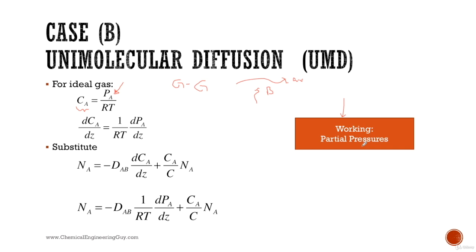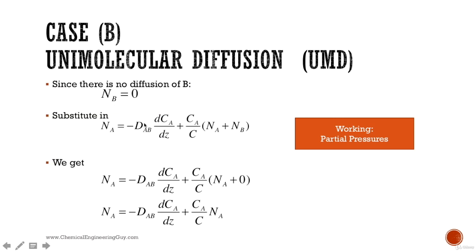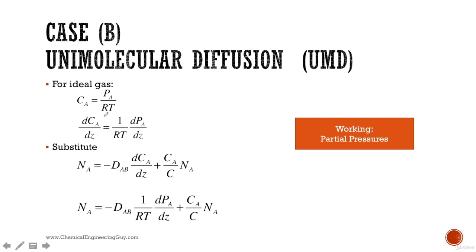Either select partial pressure or molar fraction. Getting rid of concentration of A is preferable since it's harder to calculate concentration of A in air than partial pressure. When differentiating, pressure changes with respect to distance, so we model this as a differential. R is a constant and temperature is fixed, giving us the substituted differential form.